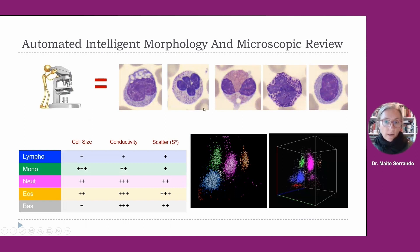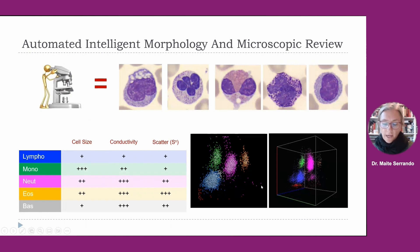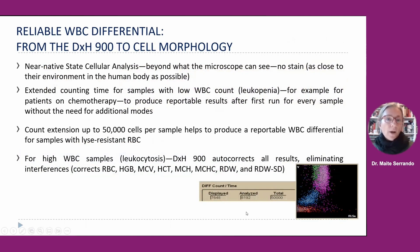Microscopically, when reviewing slides under the microscope, we can identify and describe cells, while with the automated intelligent morphology module we can classify cells into different clusters using these three parameters. Using this information, the system produces a data plot displaying a visual representation of the differential leukocyte, with volume plotted on the y-axis and rotated light scatter plotted on the x-axis. This gives us reliable white blood cell differential results from the DXH 900.